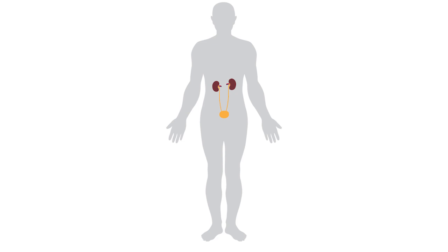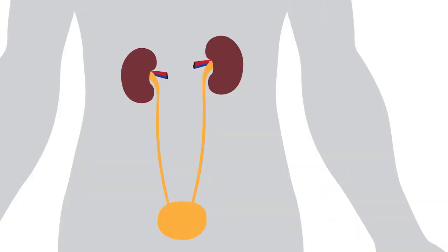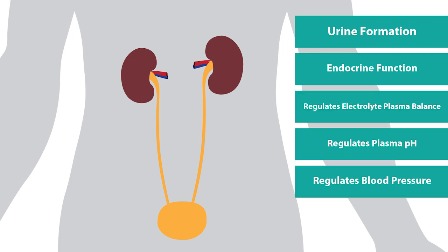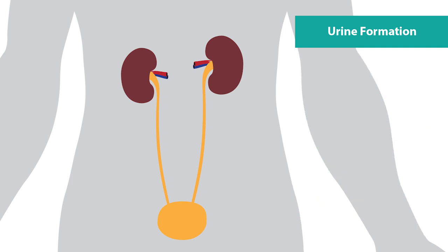The kidney is a fascinating and complex organ, and besides forming urine, it also plays an important role in endocrine function, regulation of plasma electrolytes and pH, as well as blood pressure and body water volume. In this series of lessons, we're going to answer the question, how do the kidneys form urine?